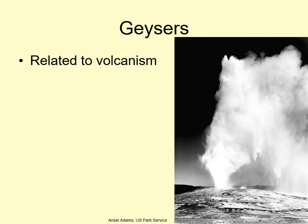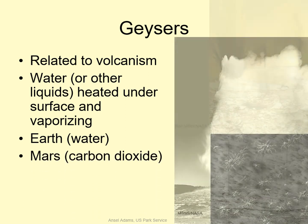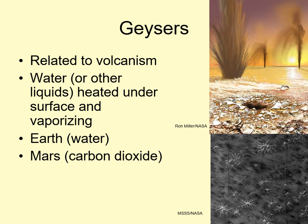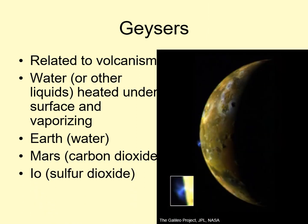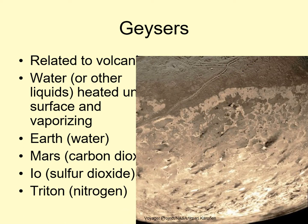Geysers are also related to volcanic activity. A geyser forms when water or some other liquid seeps underground and is heated up enough to be vaporized, with the pressure forcing it back up above the surface. Different worlds form geysers from different materials. On the Earth, geysers are made of water, but on Mars they form from frozen carbon dioxide. On Jupiter's moon Io, the geysers are made from sulfur dioxide, while on Neptune's moon Triton, they're made of liquid nitrogen. In the case of Mars and Triton, it's possible that the geysers are being powered by sunlight heating up ices, rather than the internal heat of the world.